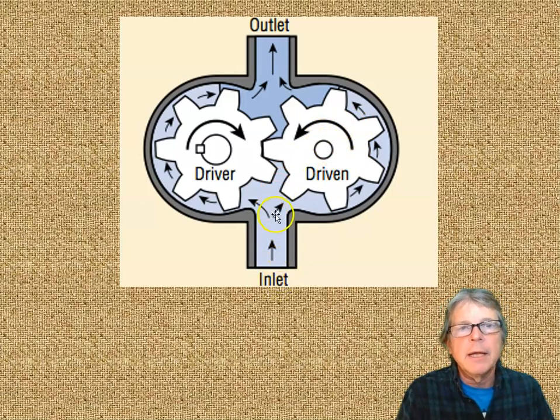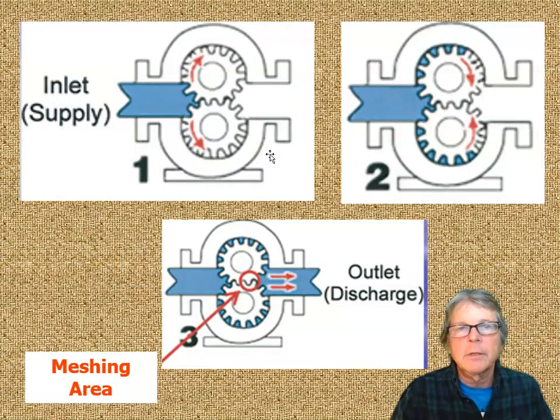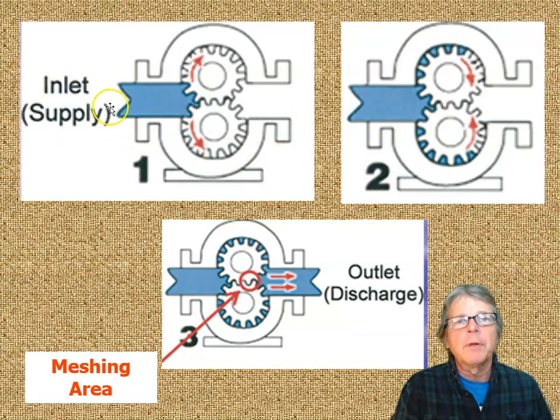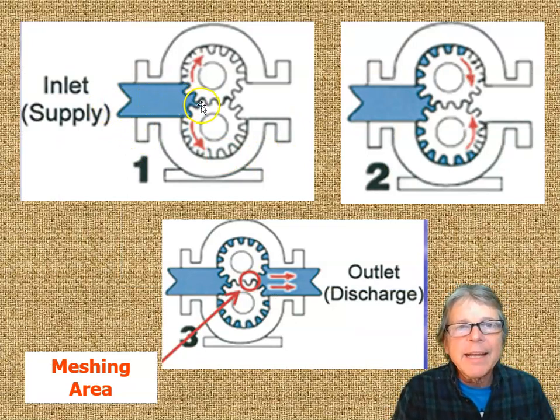The engine is driving this gear, so fluid goes either left or right. Some goes left between the teeth. Here's our inlet, number one. The colored blue comes in here. It can't go down the center—these gears are squeezed together. That's blocked off. The opening for this fluid to fit through is between the teeth.